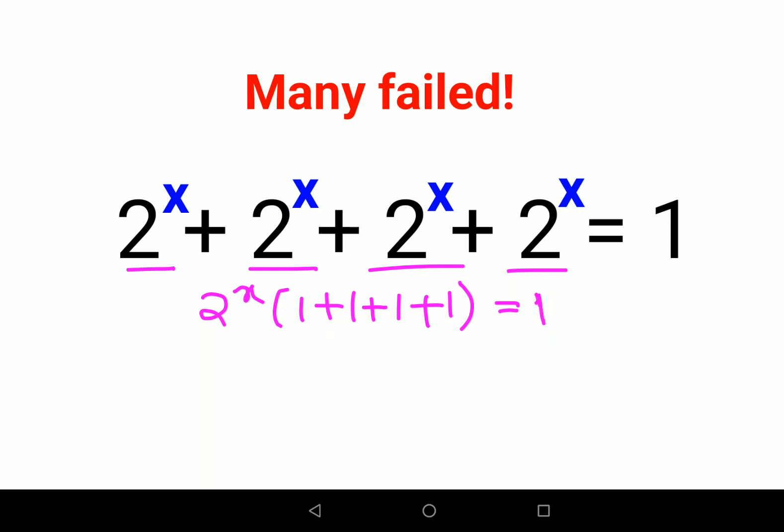We can say 2 raised to x into 4, 1 plus 1 plus 1 plus 1, this becomes 4 equals 1. Now in order to find the value of x, let's keep the numbers on one side. We'll divide both sides by 4, so we have 2 raised to x equals 1 upon 4.